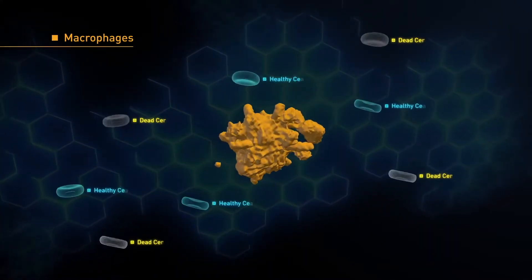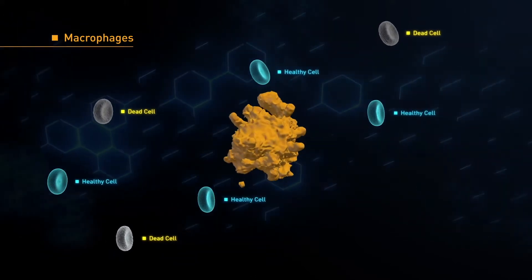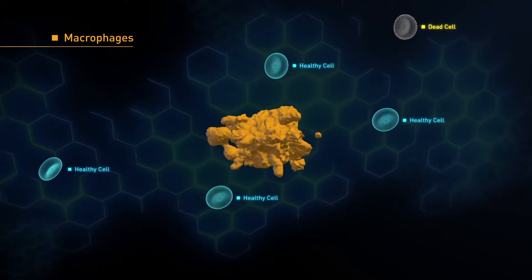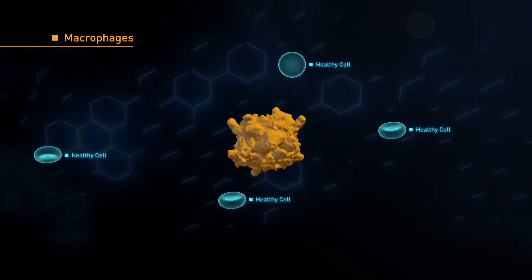Macrophages. Greek for cell eater. Macrophages locate and eat dead cells and cell debris. They also consume microbes, including bacteria, parasites, viruses, and fungi.